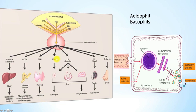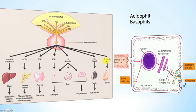Basophils also include gonadotrophs, which produce FSH. Follicle-stimulating hormone stimulates follicular growth in the ovaries and spermatogenesis in males. Luteinizing hormone leads to ovulation in females and testosterone production in males, acting in the testes. Prolactin leads to milk synthesis in the breast, and growth hormone acts on many metabolic processes around the body to induce growth.